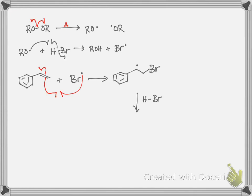The carbon radical will abstract a hydrogen atom from HBr to give us the final neutral and stable organic product, and another bromine radical. So, the chain continues.